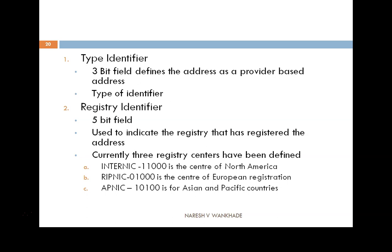The first is the type identifier — a 3-bit field that defines the address as per the provider-based address and it is used to indicate the type of identifier. The second one is the registry identifier, which is a 5-bit field and it is used to indicate the registry that has registered the address.